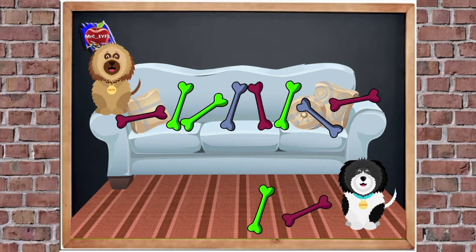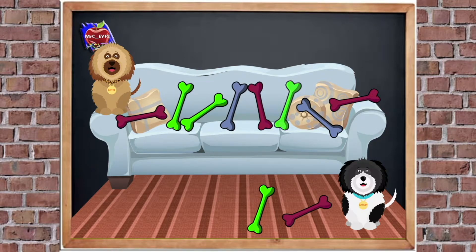All right, here's Betty and Barney. They've been playing with their toy bones and they are everywhere. Betty's got them all over the sofa and Barney's got them on the floor. Let's check: there's one, two, three, four, five, six, seven, eight. So there are eight bones on the sofa. How many bones are on the floor? Let's check: there's one, two.